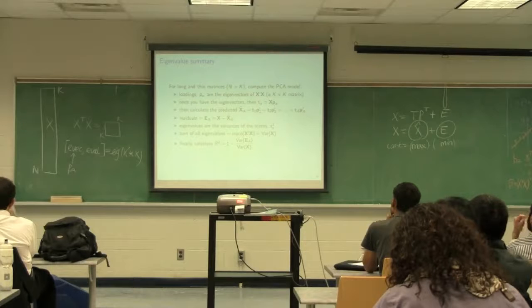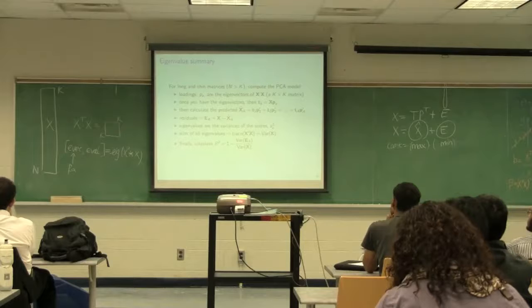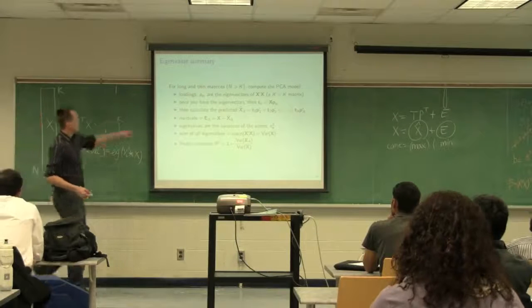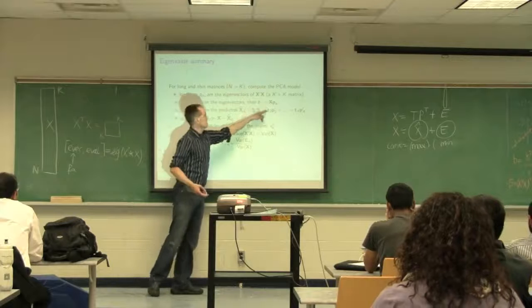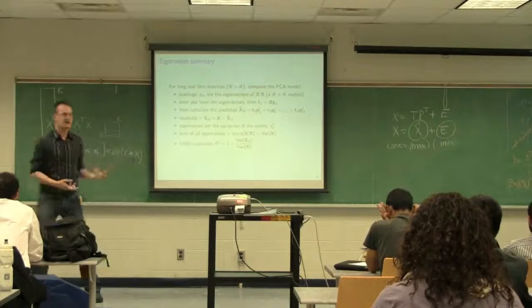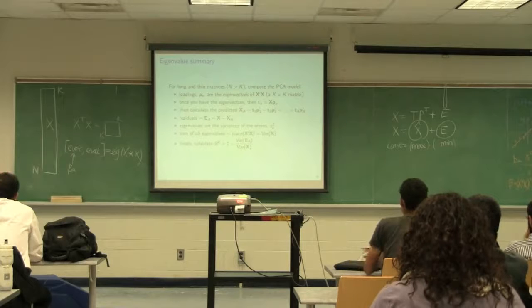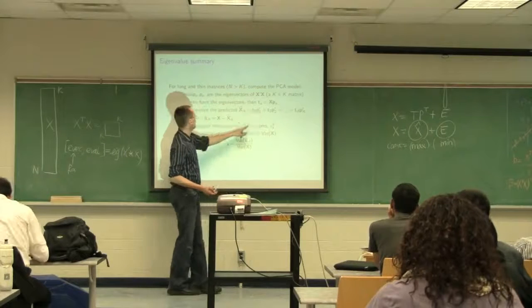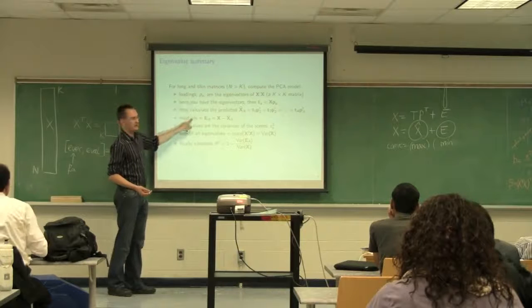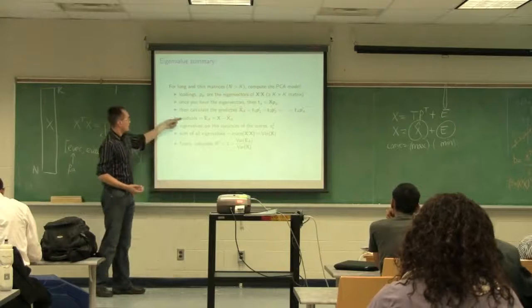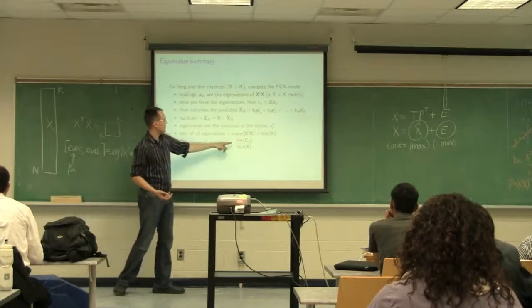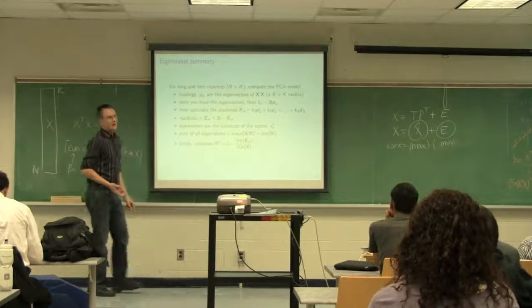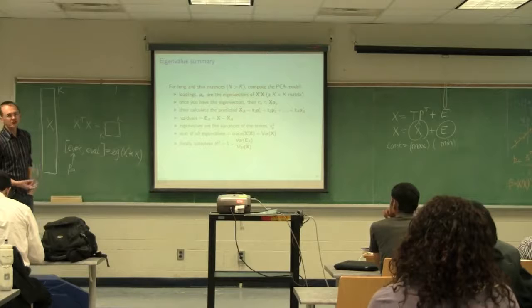Where are the scores? You don't get them. To get the scores, once you have the eigenvectors, you say T = X*P_a. So I've got my P's, and to recover my scores I say T = X*P_a. Then I've got my scores and my loadings. After that I can compute x-hat, because now I've got my scores and loadings. Once I've got x-hat, I calculate my residuals: E = X - x-hat. Once I have my residuals, I can calculate R-squared. R-squared requires the variance of the residuals in the numerator and the variance of what I started with in the denominator. That's for really long, thin matrices.